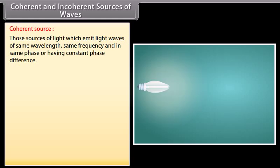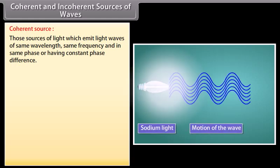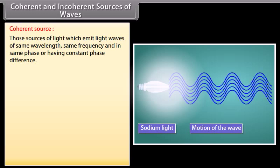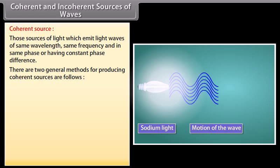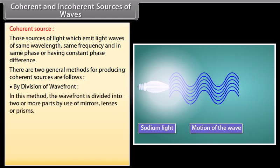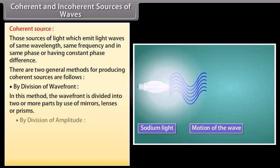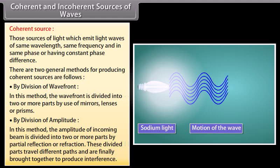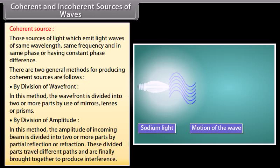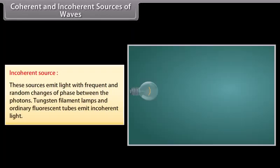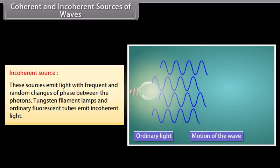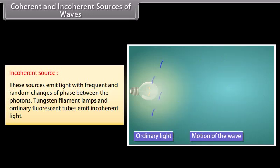Coherent sources of light are those which emit light waves of the same wavelength, same frequency, and in the same phase or having a constant phase difference. There are two general methods for producing coherent sources: by division of wave front, where the wave front is divided into two or more parts using mirrors, lenses, or prisms; and by division of amplitude, where the amplitude of the incoming beam is divided by partial reflection or refraction and the parts travel different paths before being brought together to produce interference. Incoherent sources emit light with frequent and random changes of phase between photons — tungsten filament lamps and ordinary fluorescent tubes emit incoherent light.